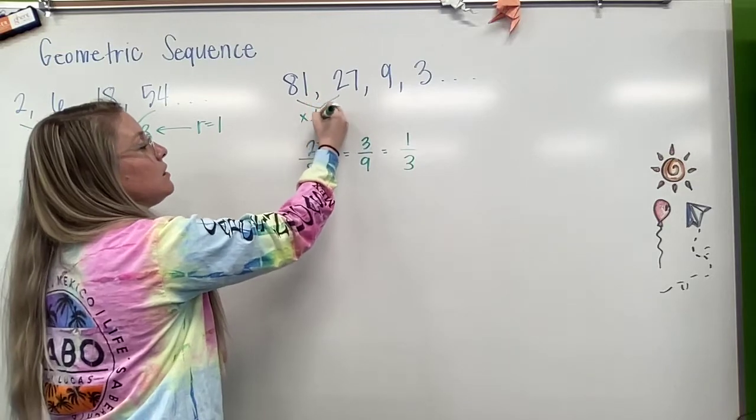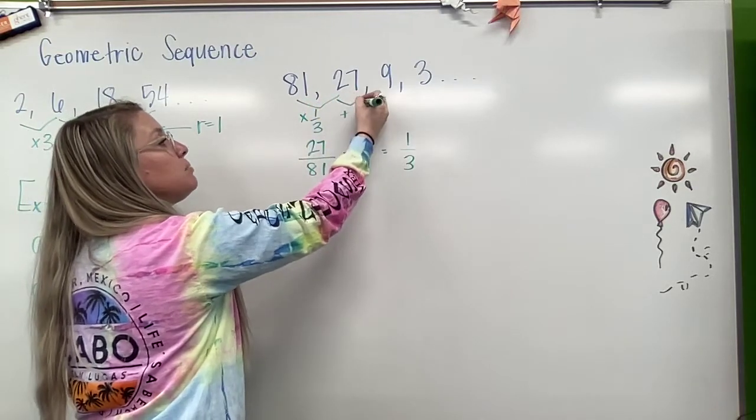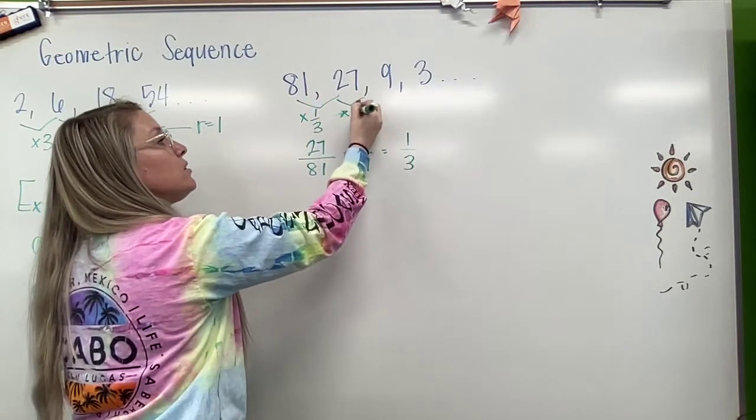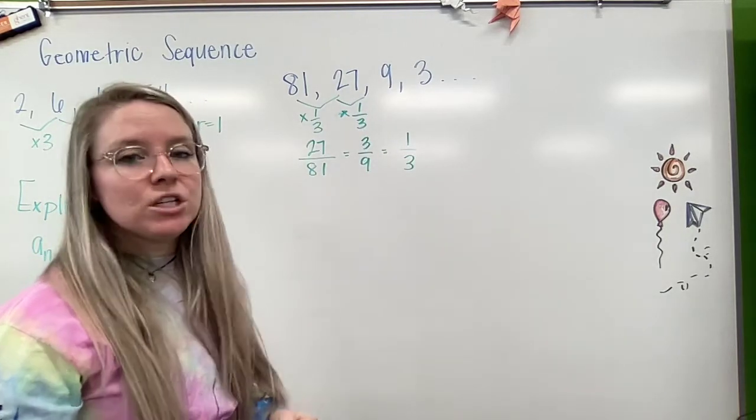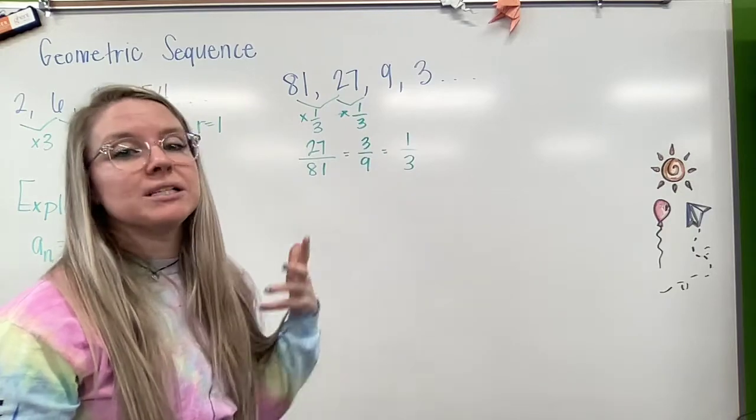So what I'm doing here is I am multiplying by 1 third each step. It looks like division, but we're always going to treat it as multiplication, so that's why we're going to say 1 third.